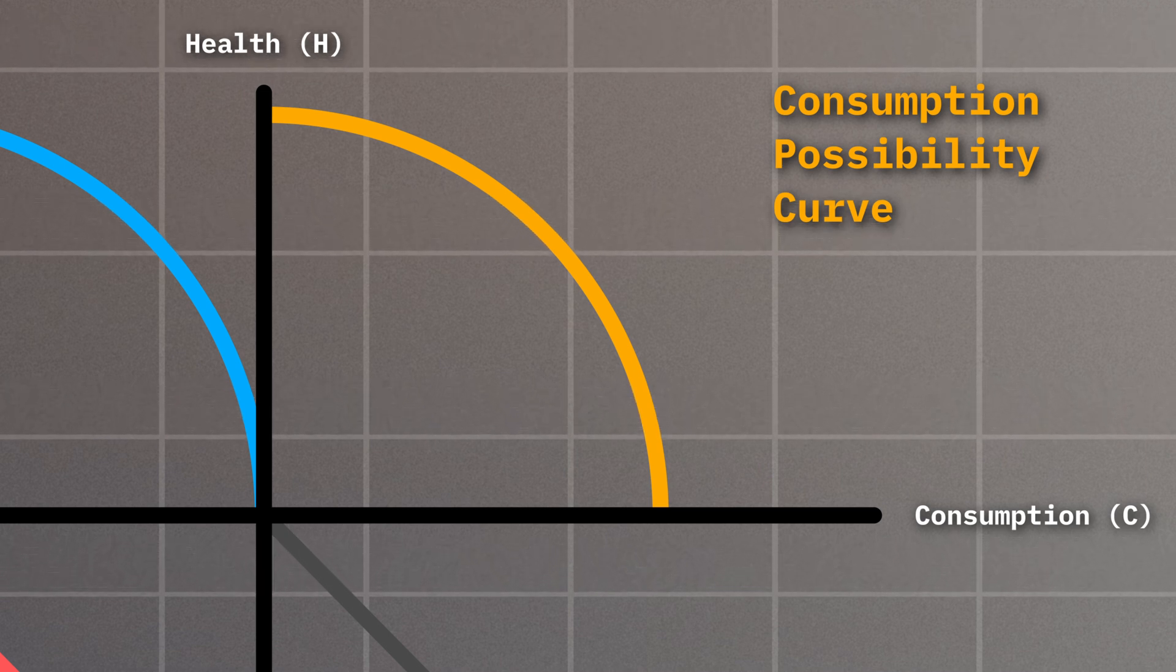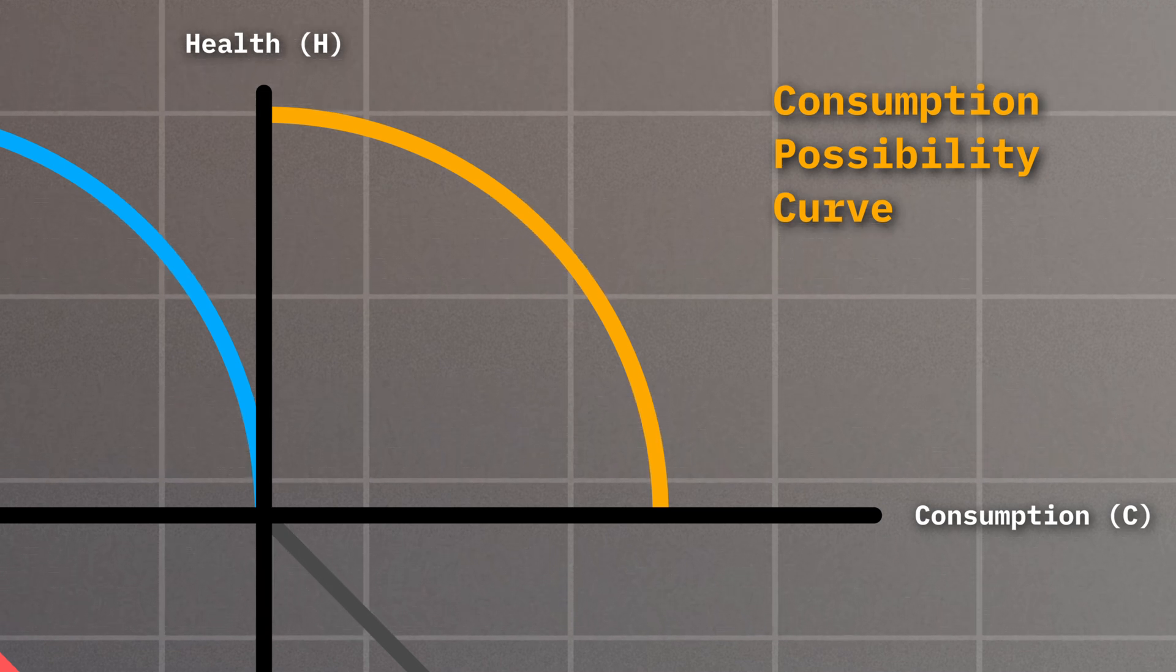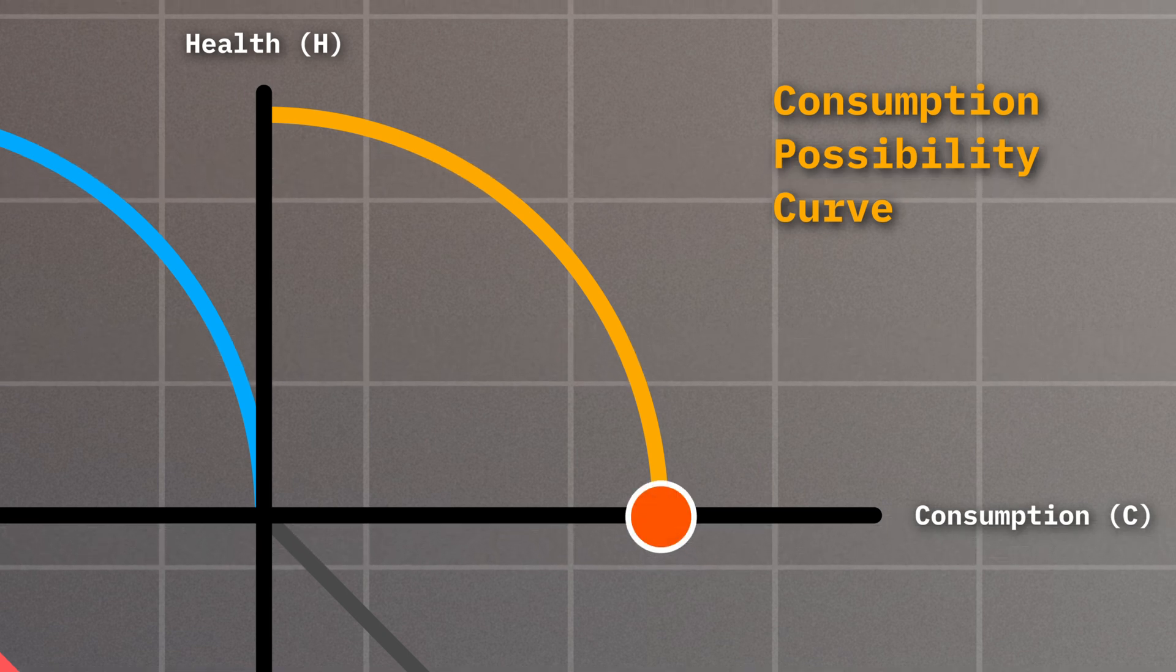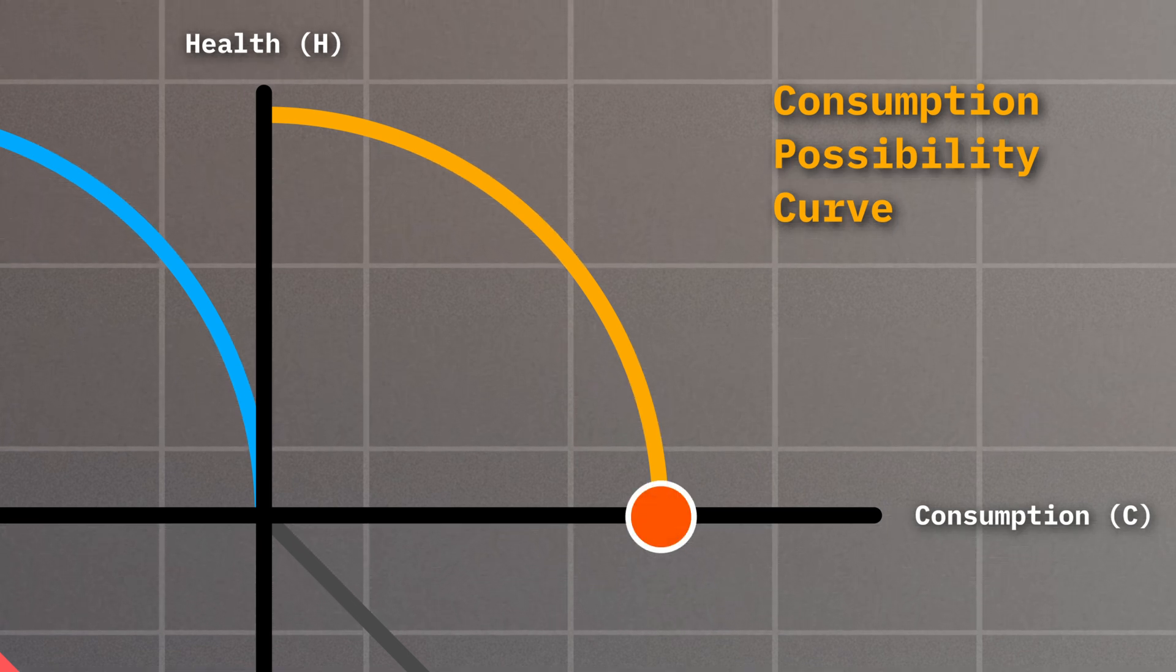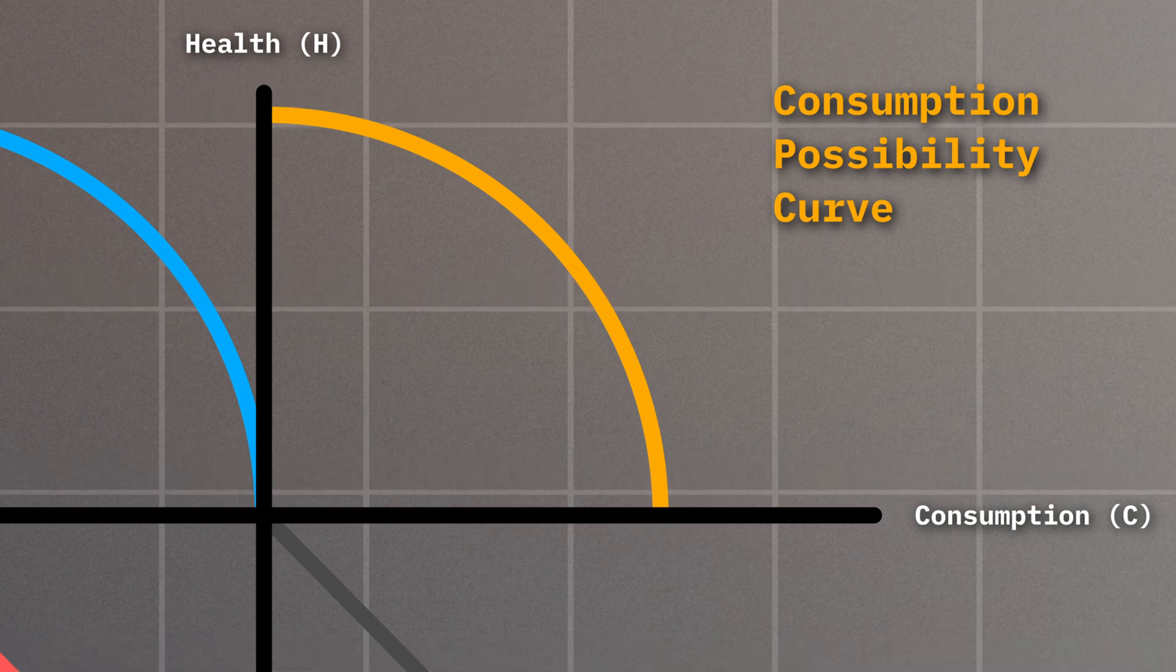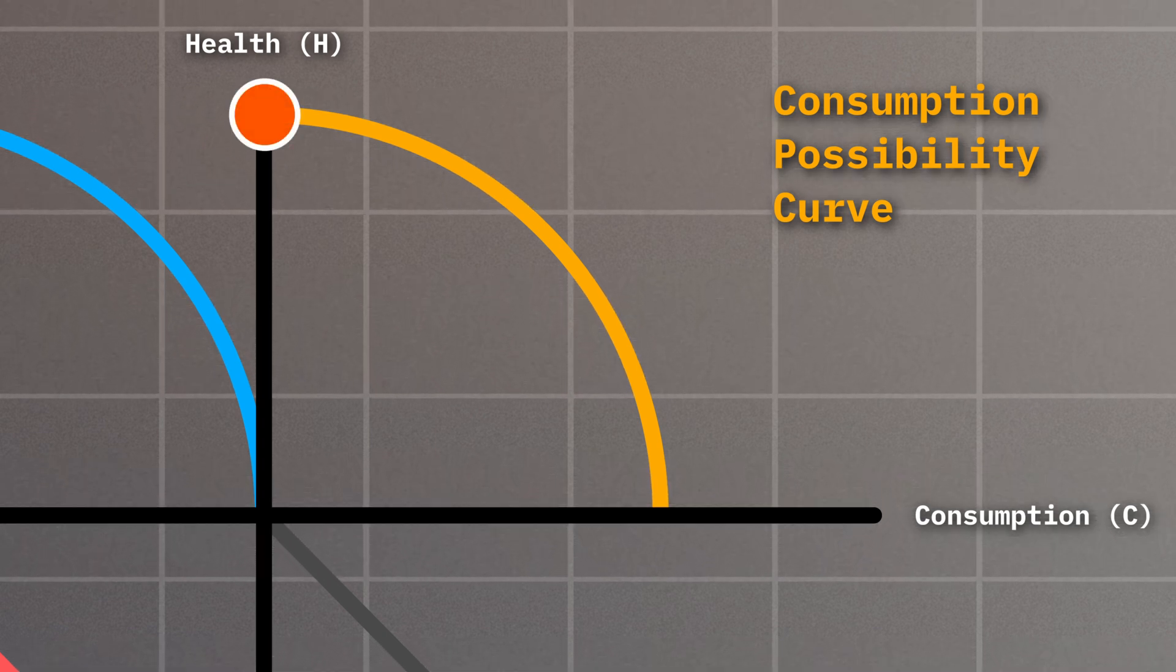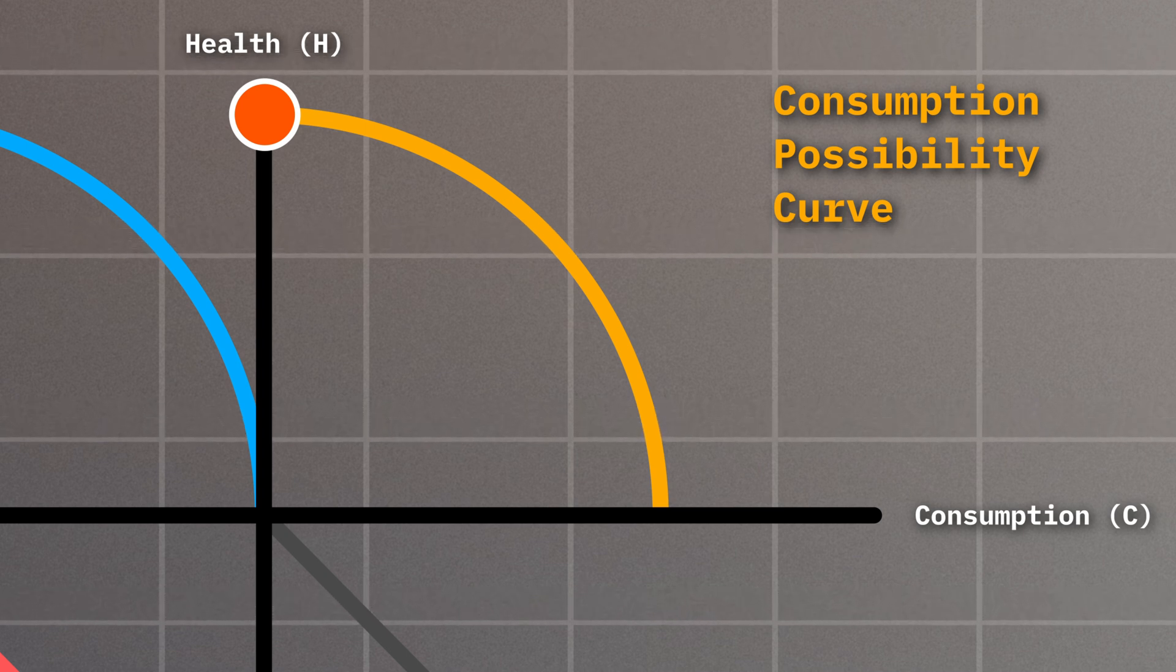For example, if you would decide to maximize consumption and completely ignore your health, you would be on this point on the consumption possibility curve, where it crosses the x-axis. If instead you decide to maximize your health and spend zero money on non-health-related consumption, you'd be on this point on the curve, which crosses the y-axis.